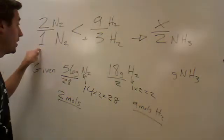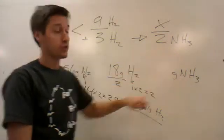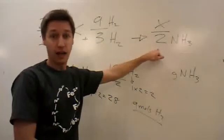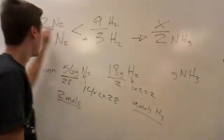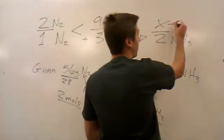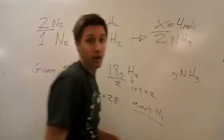From the balanced equation, we see that one nitrogen gas is able to make two ammonias. If we have two nitrogen gas, how many ammonias can we make? 2 over 1 equals x over 2. x is going to be 4 moles. We're able to make 4 moles of ammonia.